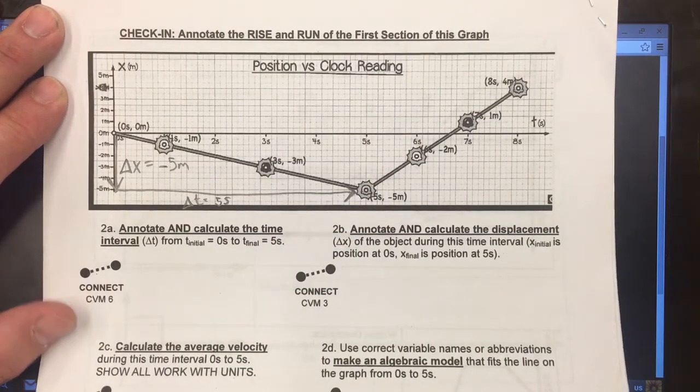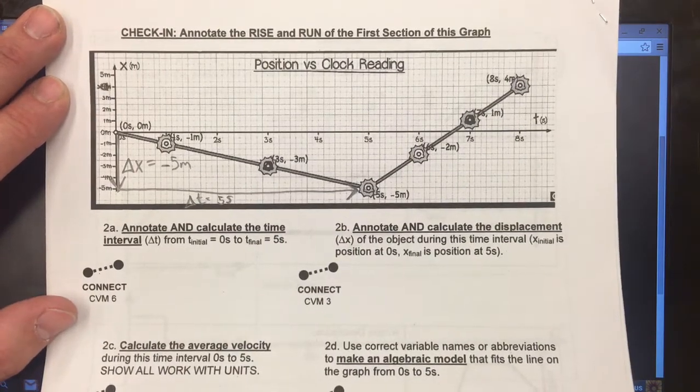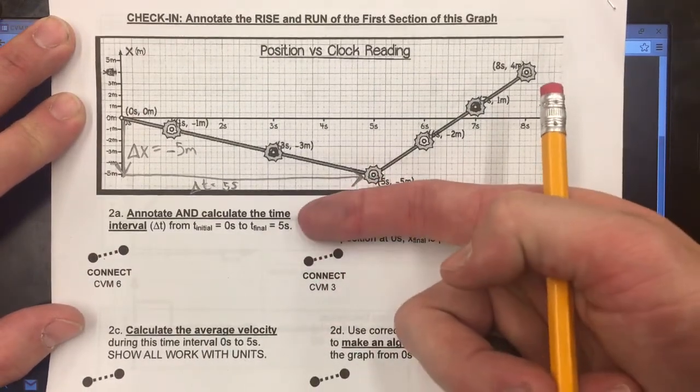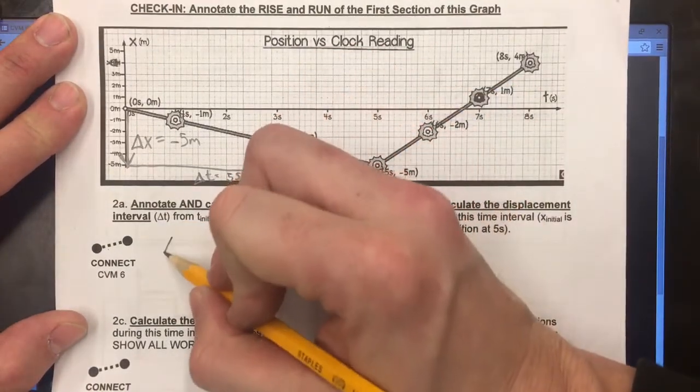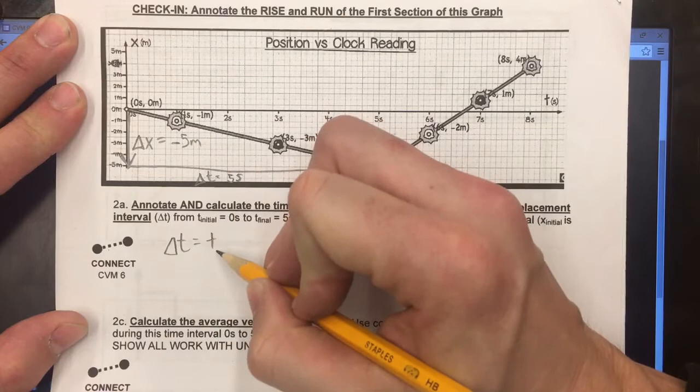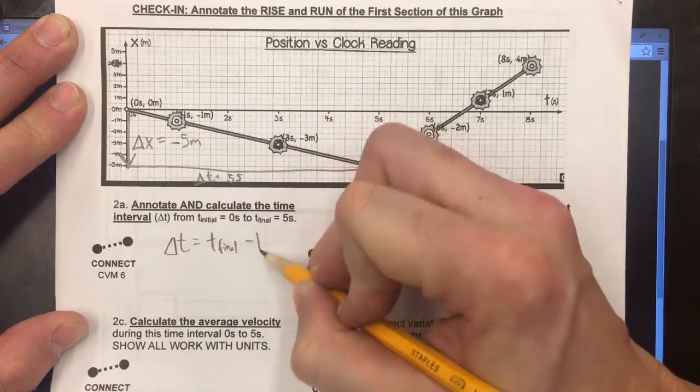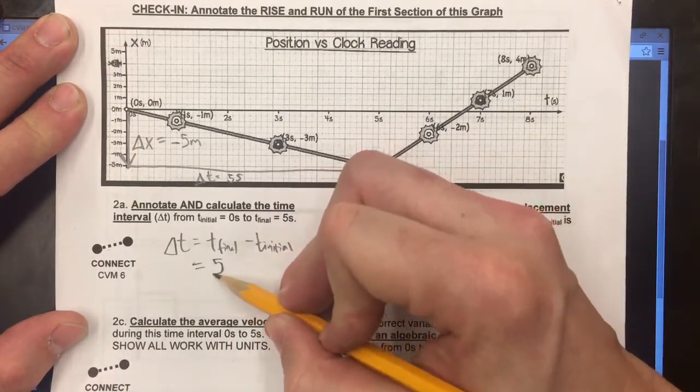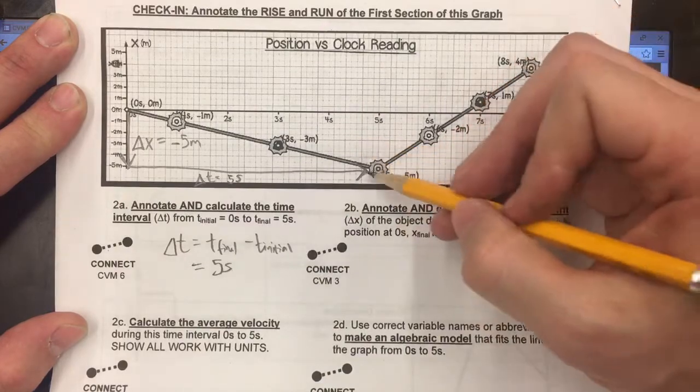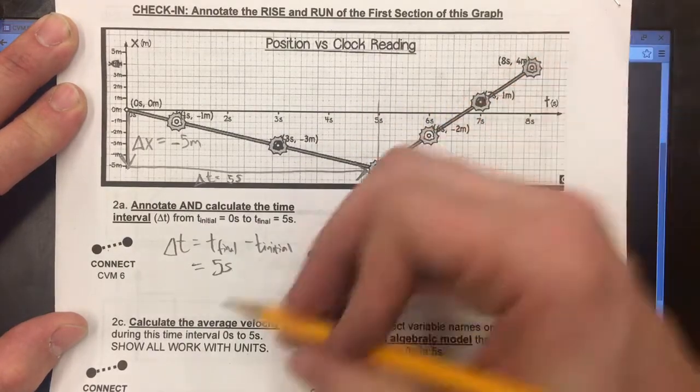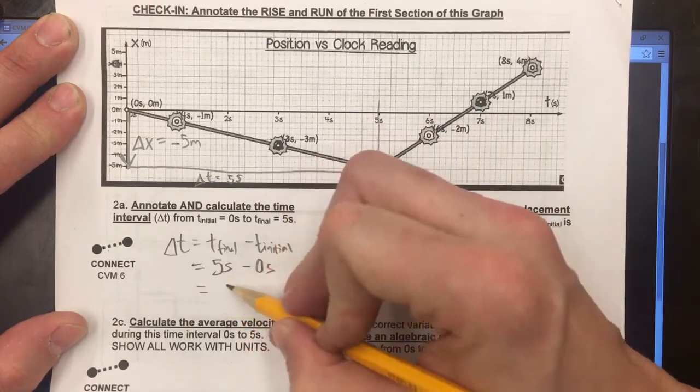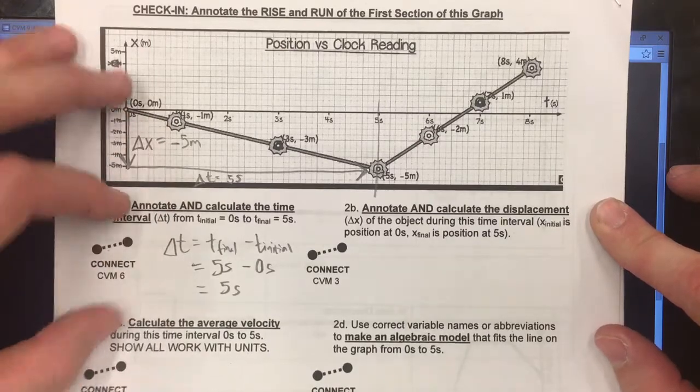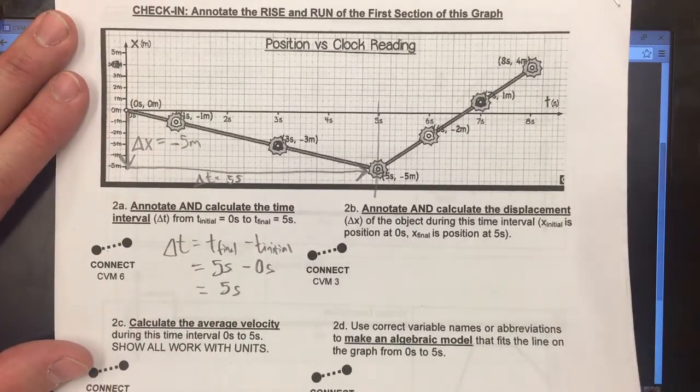I'm going to show that here. So I'm going to calculate a time interval from zero seconds to five seconds. It looks like this: triangle T equals T final minus T initial. That is five seconds. That is the time, the clock reading when the slope ends, minus zero seconds, which as we already know is five seconds. We did this before in class for displacement, but we can do it for time interval just the same way.